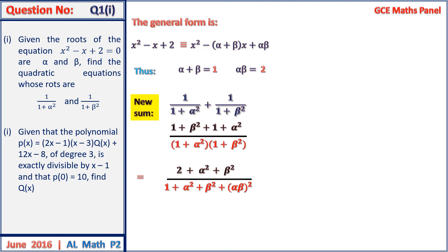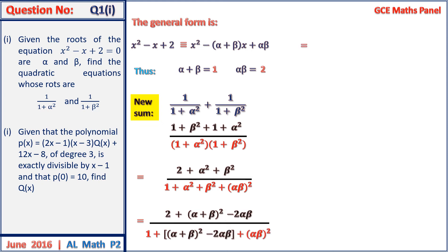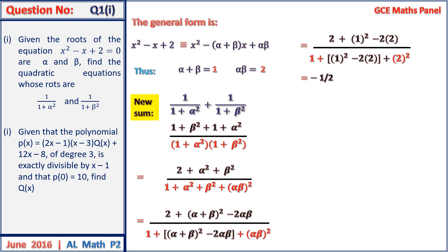Further simplifying, we know that alpha squared plus beta squared can be written as alpha plus beta all squared minus 2 alpha beta. We find the same expression in the denominator, so we replace it by the same quantity. Putting in the values, we obtain the new sum as one half.